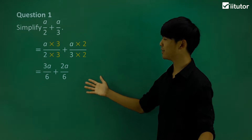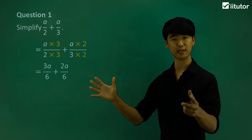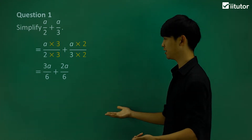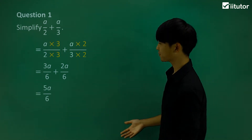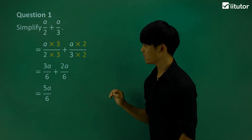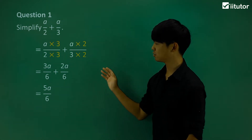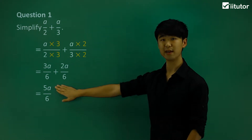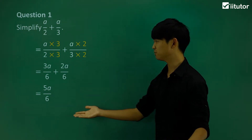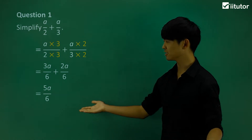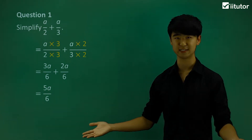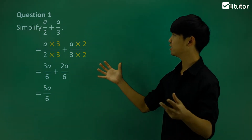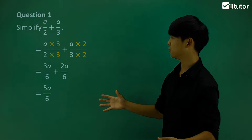Now I can put it in one single fraction. And you can see 3a plus 2a is obviously 5a, so my simplified fraction in this case is 5a over 6. We just put it in the common denominator.